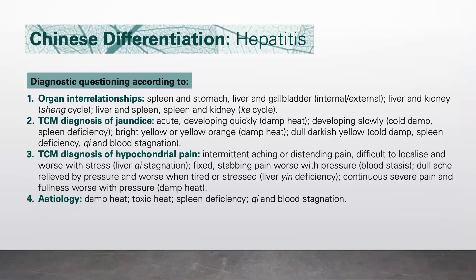TCM diagnosis of jaundice: if it's acute, developing quickly, it's due to damp heat. If it's developing slowly, it could be due to cold, damp, or spleen deficiency. If the jaundice is bright yellow or yellow-orange, it's due to damp heat. If it's dull or darkish yellow, it's due to cold damp, spleen deficiency, or qi and blood stagnation.